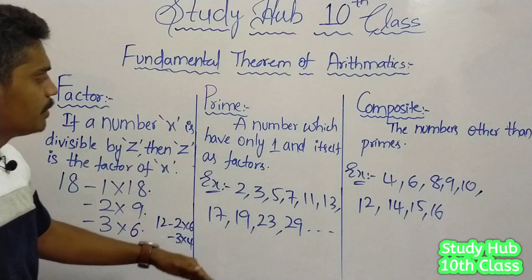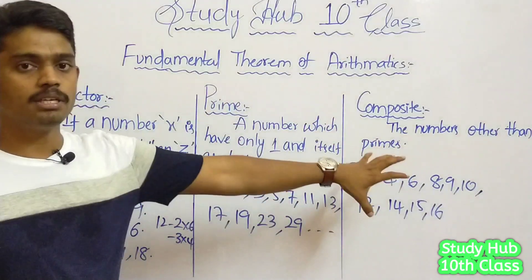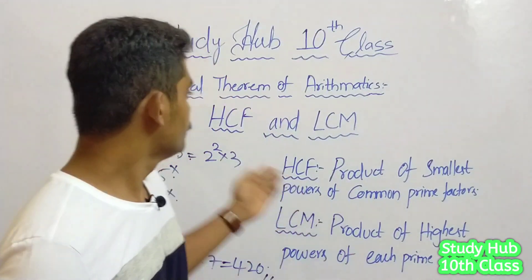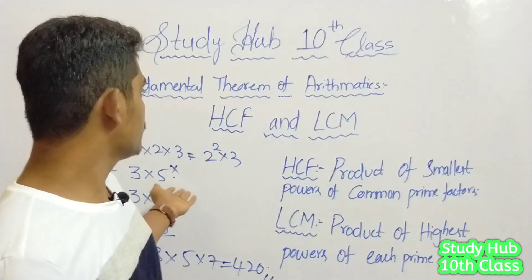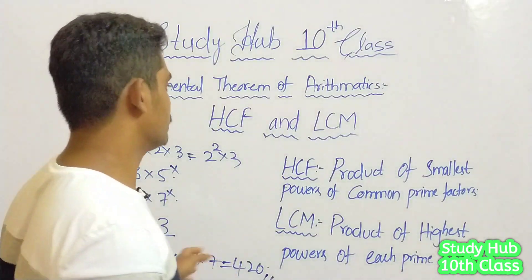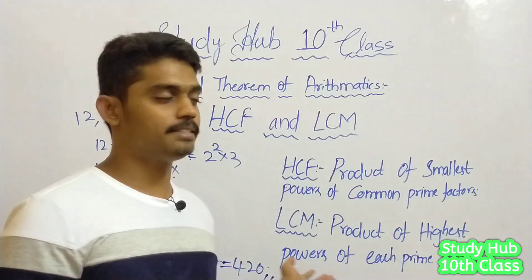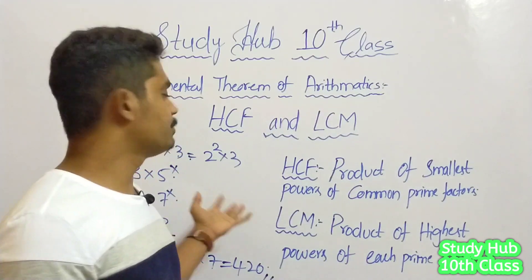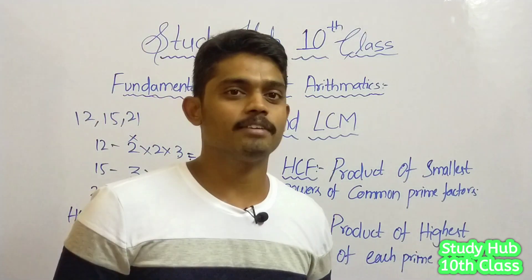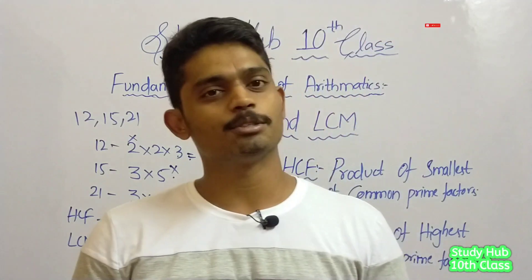So, friends, factors, prime numbers, and composite numbers — all of this we are going to use in prime factorization. This is the topic of finding HCF and LCM using prime factorization, which is a very important concept of the real numbers topic. We are going to discuss that in our next session. Thank you for watching. Please do subscribe, like, and share and encourage us. Thank you so much, friends.